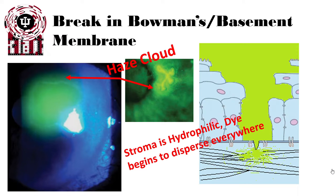When we have a break in Bowman's layer and the basement membrane, the stroma — which is highly hydrophilic and slightly dehydrated due to the corneal endothelium constantly pumping out water — readily absorbs the tear film's water. This brings fluorescein dissolved in that water into the stroma. With no barrier to contain it, the fluorescein disperses in a cloud throughout the stroma in all directions, as seen in the diagram on the right.